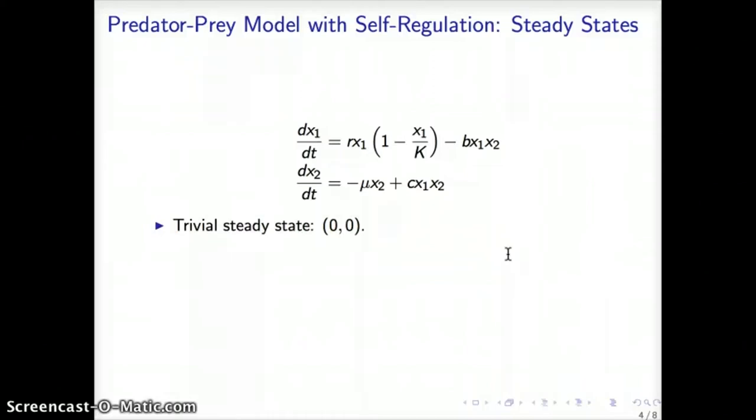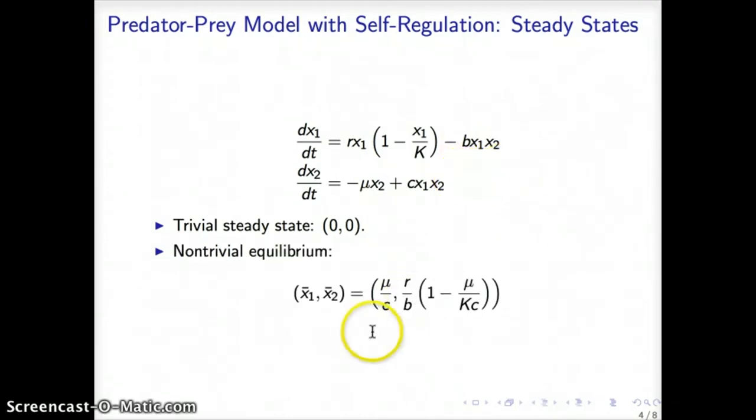Turns out that if we want to compute steady states, all we have to do is to set equation number 1 equals 0, equation number 2 equals 0, and solve for both x₁ and x₂. We will find two solutions. One of them is called the trivial solution, and we can easily verify those by evaluating the equations at (0,0). The non-trivial solution is an expression that takes this form: x₁ is μ over c, and x₂ equals this expression here.